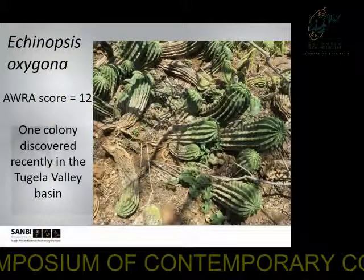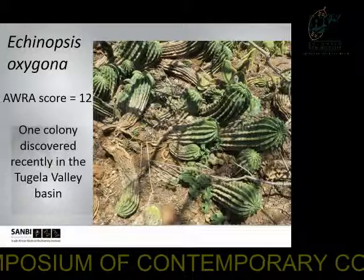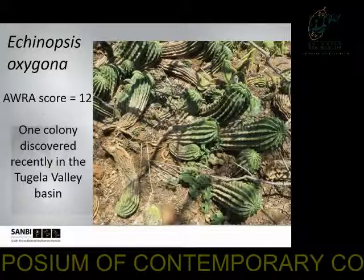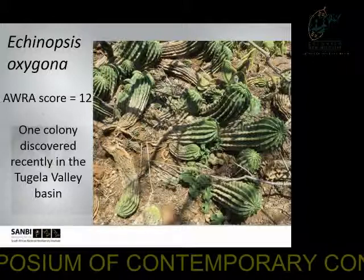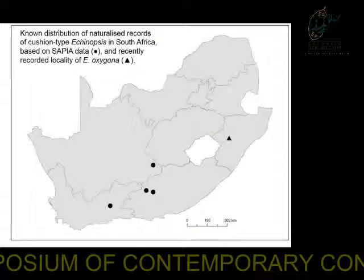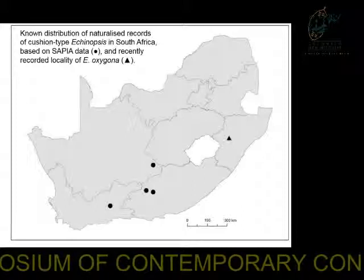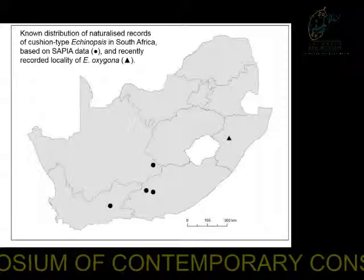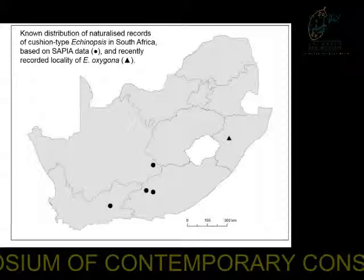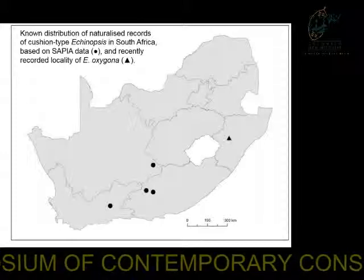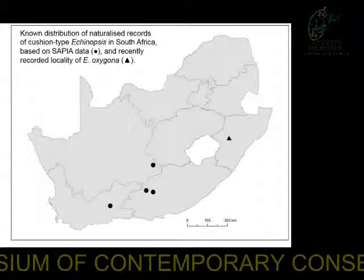The next species is from the cactus family: Echinopsis oxygona, with a weed risk assessment score of 12 — not high, but still clearly in the reject category. One colony was recently discovered in the Tegela Valley Basin. It is a tricky plant — the triangle on the map is the first confirmed record for South Africa. However, on the Southern African Plant Invaders Atlas there are other points reporting Echinopsis-type cushioned cacti, so this plant may already be more widespread depending on species-level identification of those points.